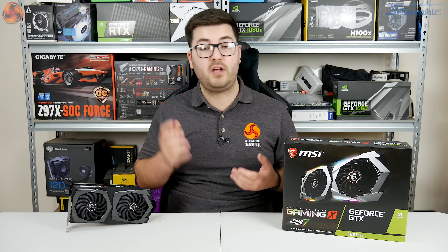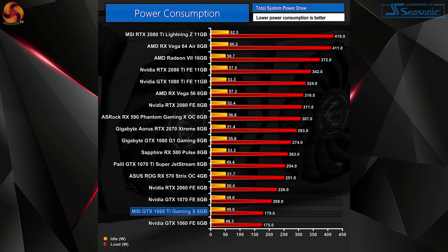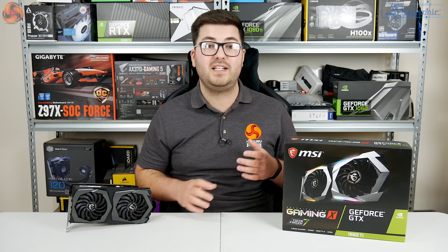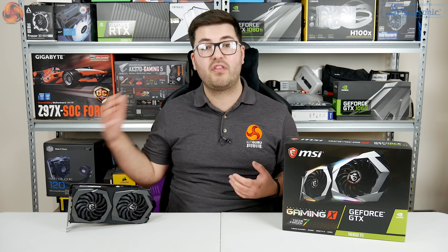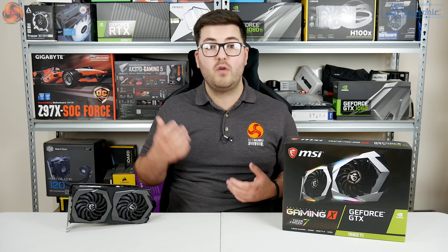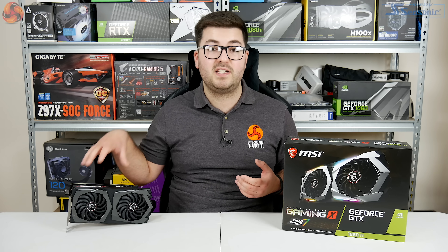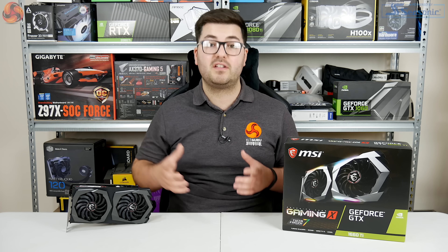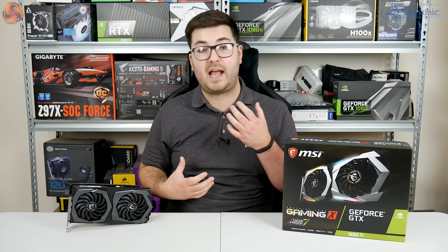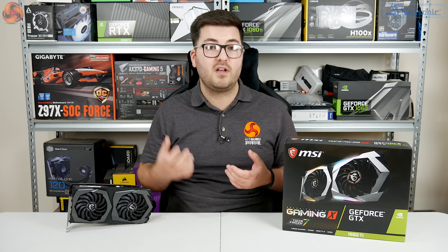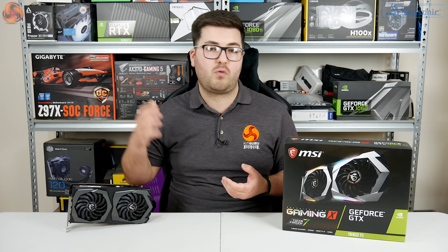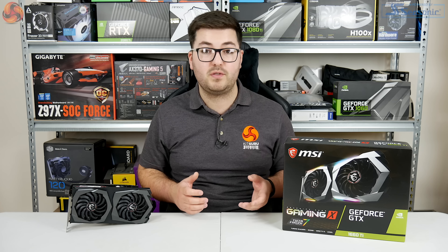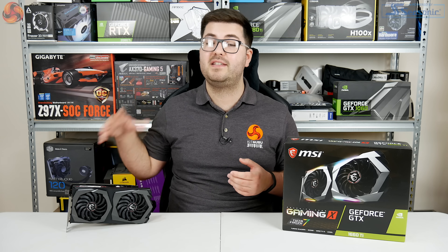Power consumption is another impressive area — total system power draw peaked at just 179 W at the wall. That's only 4 W more than a GTX 1060 and about 30 W less than a GTX 1070. Considering the 1070 and 1660 Ti are effectively performance-matched, this shows the Turing architecture's power efficiency improvements: the same performance for about 30 W less.